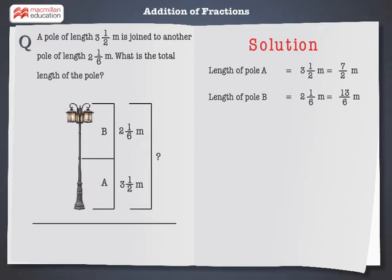Total length of the pole is equal to length of pole A plus length of pole B.